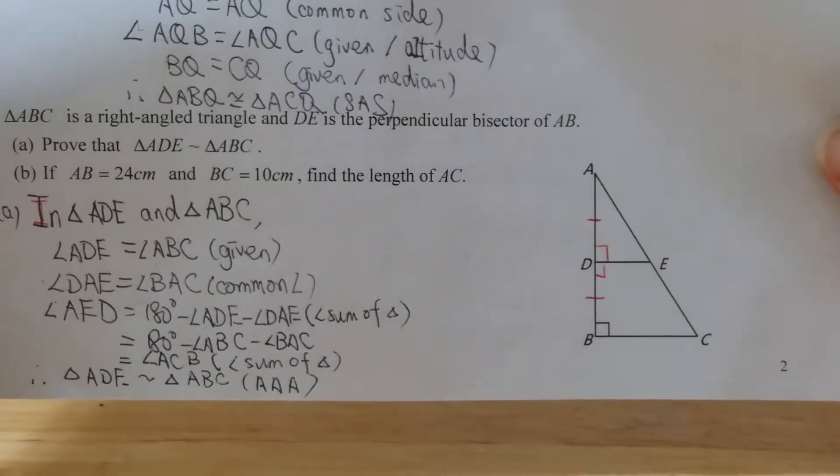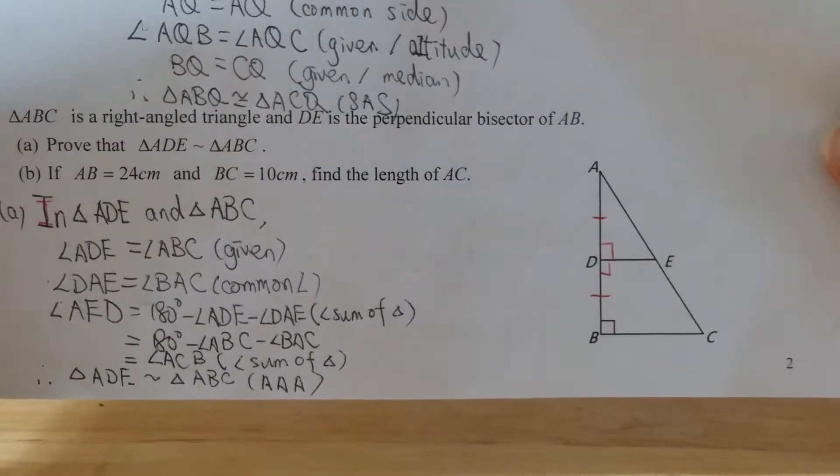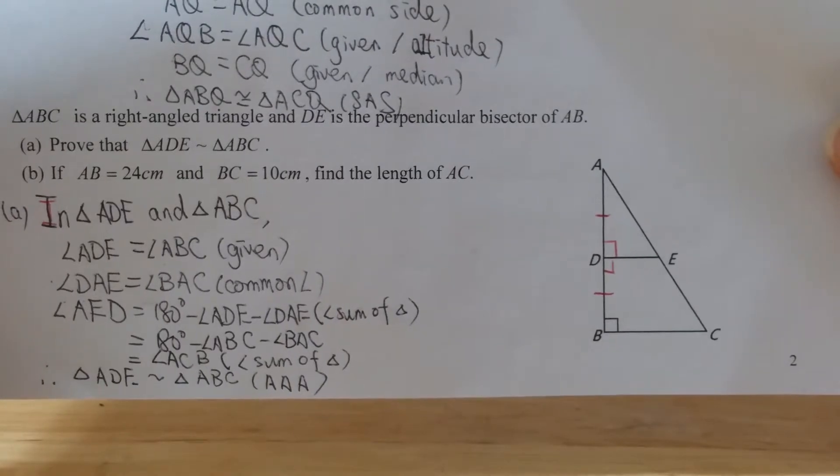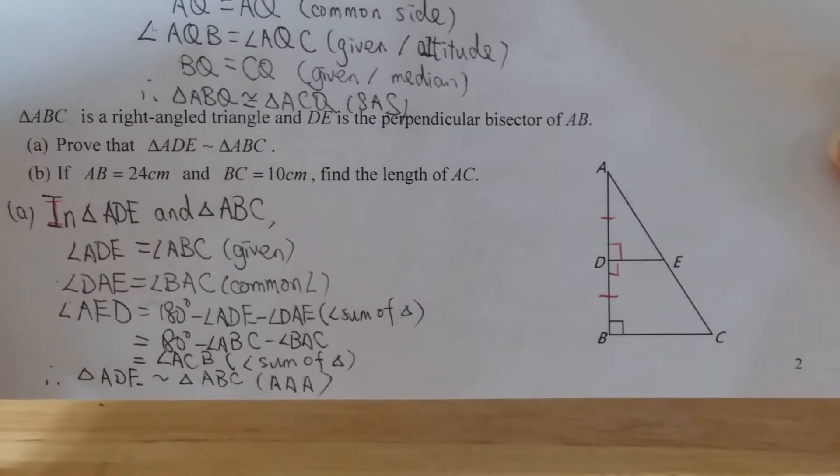Okay, now for part b, you will see for part b that AB equals 24cm and BC equals 10cm and this is the right angle and we find AC, that is Pythagorean theorem.